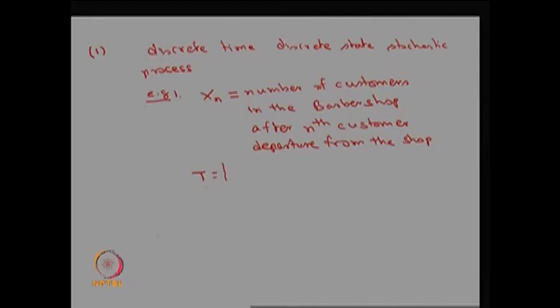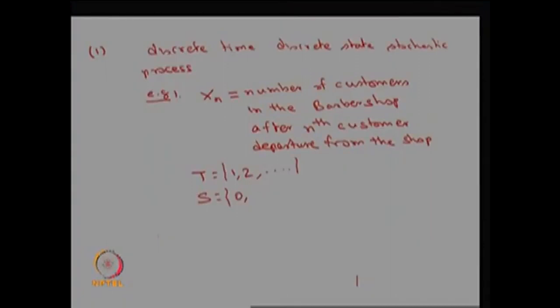After the customer leaves, the possible values of capital T will be 1, 2, 3 and so on — that is the number of customers in the system. The possible values of Xn: there is a possibility of no customers in the system when someone leaves, or one, two and so on. So capital S can be countably finite or countably infinite, making this a discrete time discrete state stochastic process.